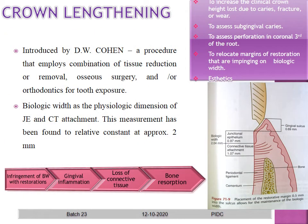The next procedure is crown lengthening, introduced by DW Cohen. It employs a combination of tissue reduction or removal, osseous surgery, and/or orthodontic extrusion for tooth exposure. It is done to increase clinical crown height lost due to caries, fracture, or wear; to assess subgingival caries; to assess or perform repair of a perforation in the coronal third of the root; to relocate margins of restorations impinging on the biologic width; and for aesthetics.